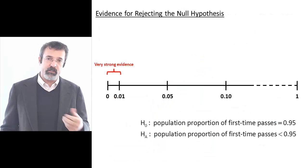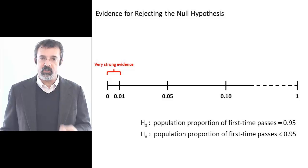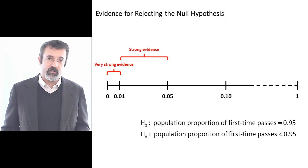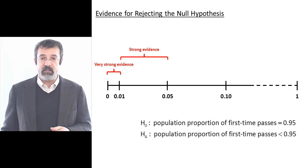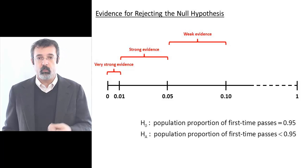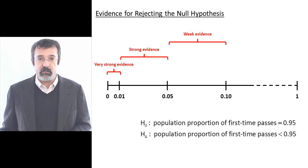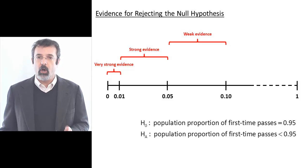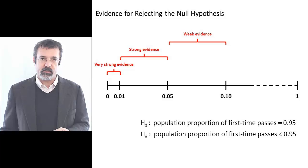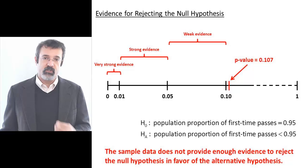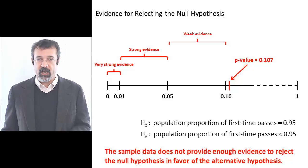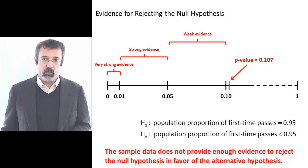A p-value between 0 and 0.01 indicates very strong evidence for rejecting the null hypothesis. A p-value between 0.01 and 0.05 indicates strong evidence for rejecting the null hypothesis. A p-value between 0.05 and 0.10 indicates weak evidence, and a p-value above 0.10 indicates no evidence for rejecting the null hypothesis. Our p-value is 0.107, therefore we conclude that the sample does not provide evidence to reject the null hypothesis in favor of the alternative hypothesis.